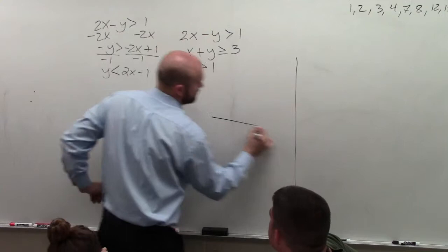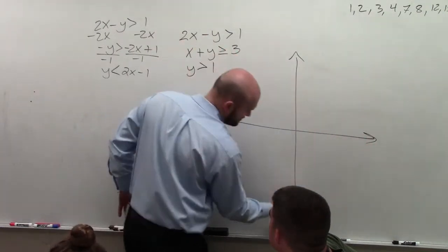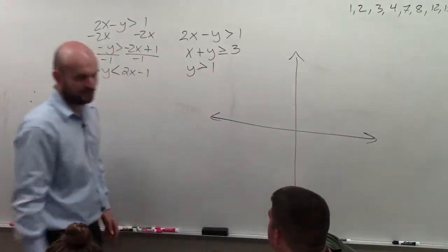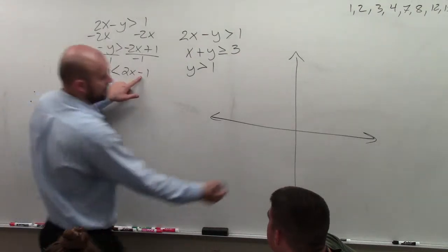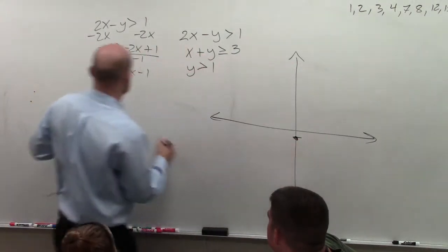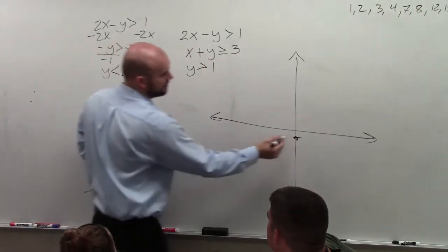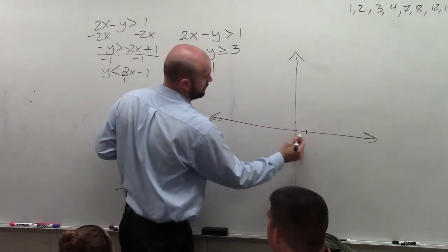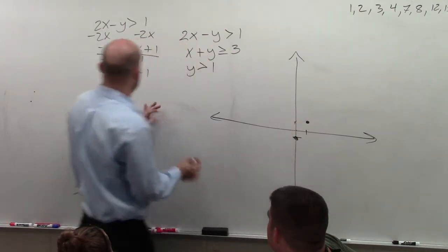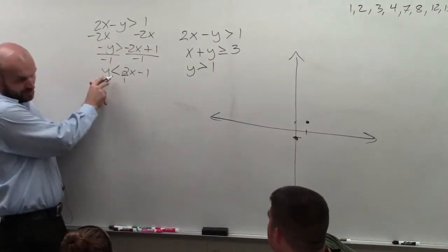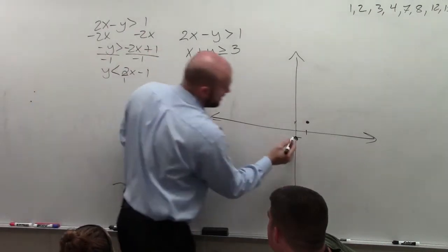So we graph the first one. Go down to negative 1 for the y-intercept. Slope is 2 over 1, so go up 2 over 1. Now we look at the inequality symbol — it's less than, so it's going to be a dashed line.